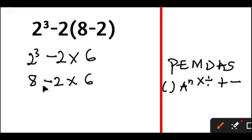We now have subtraction and multiplication. According to PEMDAS, multiplication has higher priority than subtraction, so we do this multiplication. 2 times 6 gives 12.